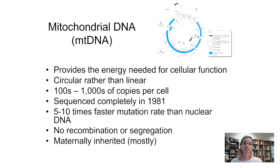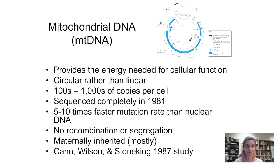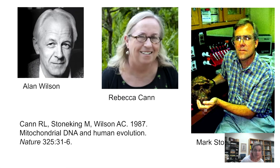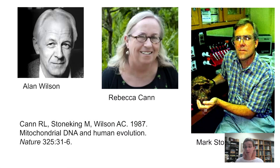Let me tell you about one of the most elegant and groundbreaking studies in population genetics, done right here on the UC Berkeley campus. Back in 1987, Alan Wilson, running a genetics lab in Barker Hall, had two graduate students: Rebecca Cann and Mark Stoneking. They were very clever, much like the graduate students today — something to think about as you interface with your GSIs, because this discovery was made by Berkeley graduate students.